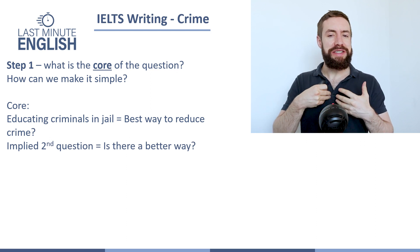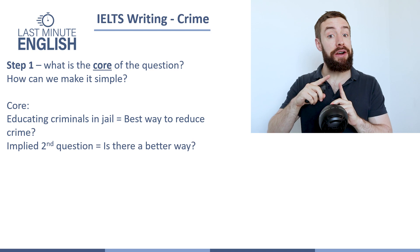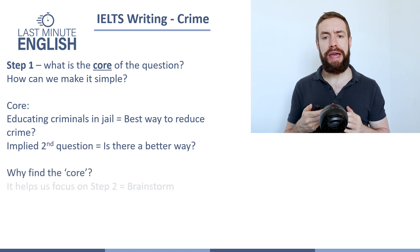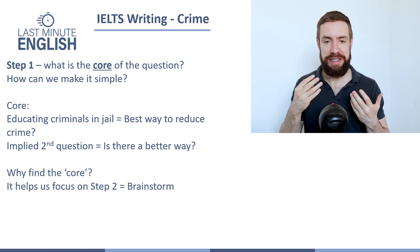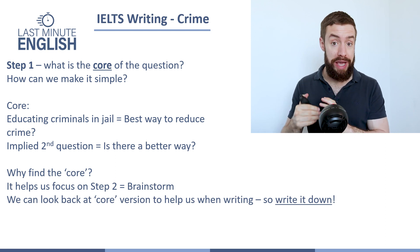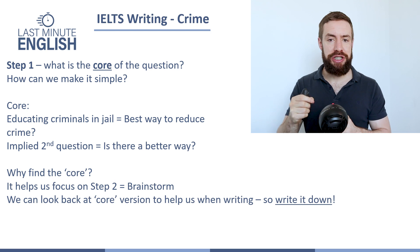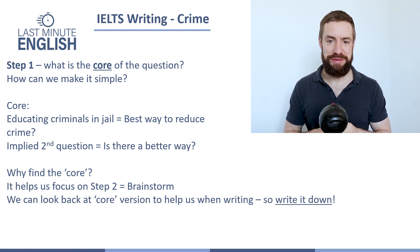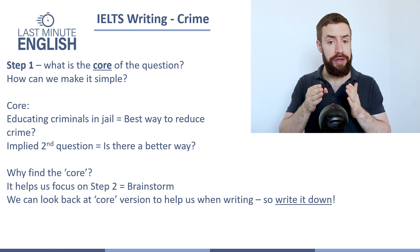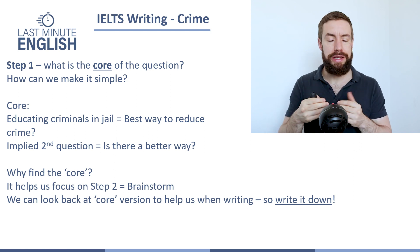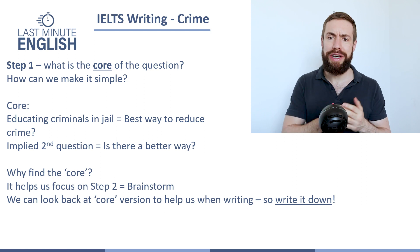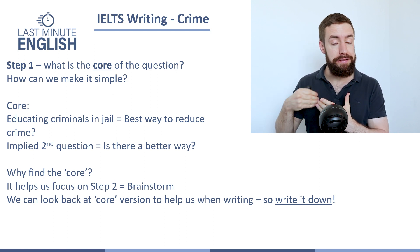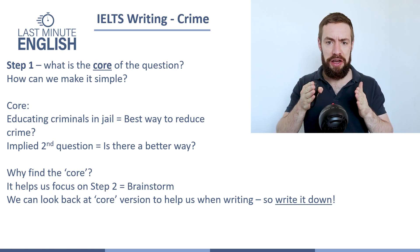And then we get a kind of implied second question: is there a better way to reduce crime than educating criminals in prison? Why do we find the core? Well, first of all, it helps us in step two with brainstorming. And it helps us when we're in the middle of writing our essay to check: am I really focusing on this question, or did I get distracted and start thinking about a different question? So I suggest writing the core down on your question paper or a separate sheet — not as part of your answer — somewhere easy to quickly check so you stay focused on the question.